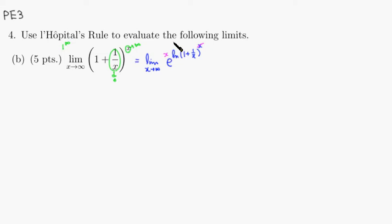Instead of writing it as multiplied by x, we can write it as divided by 1 over x. Multiplying by x is equivalent to dividing by 1 over x. The reason we want to do that is so that we have a quotient form, so that we can easily apply L'Hôpital's rule.